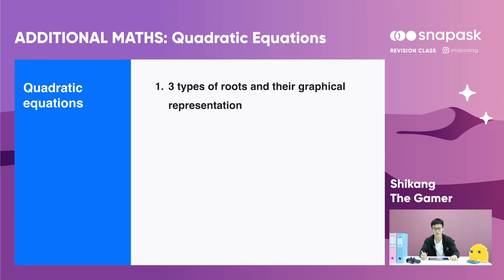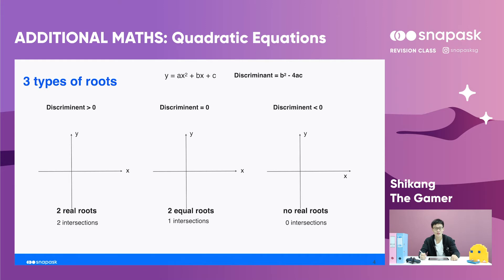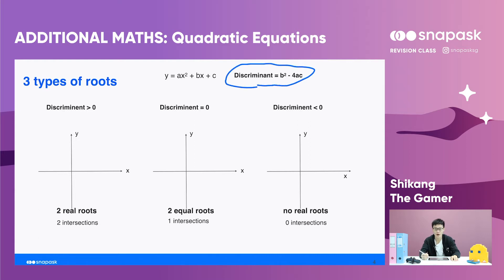We'll be learning about three types of roots and their general interpretations. Before we find the type of root, we need to find the discriminant first. The discriminant is found using this formula: b squared minus 4ac. This came from the quadratic formula that you have been learning in school.